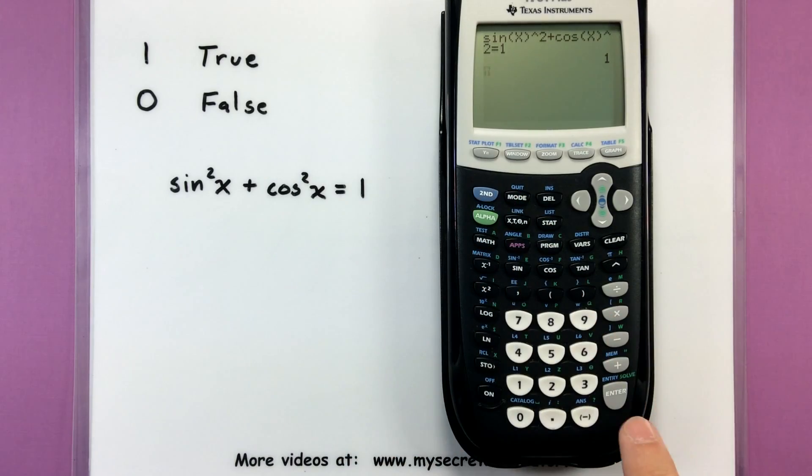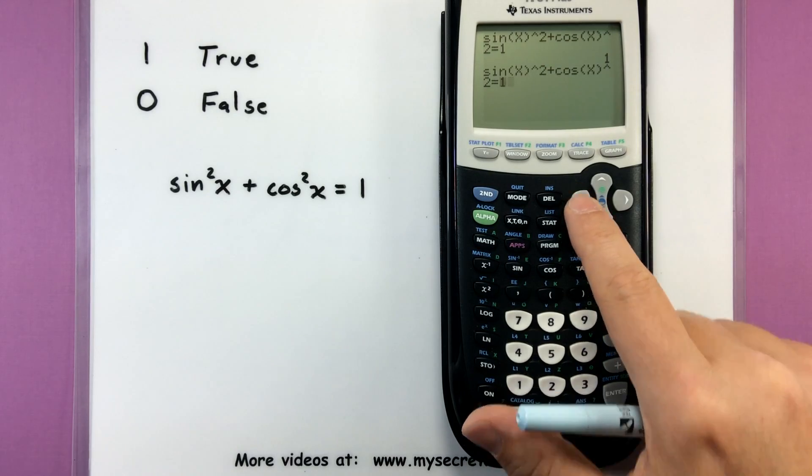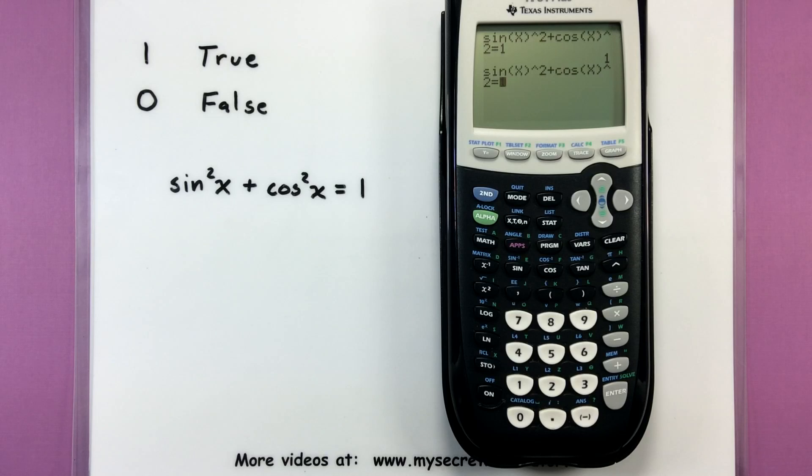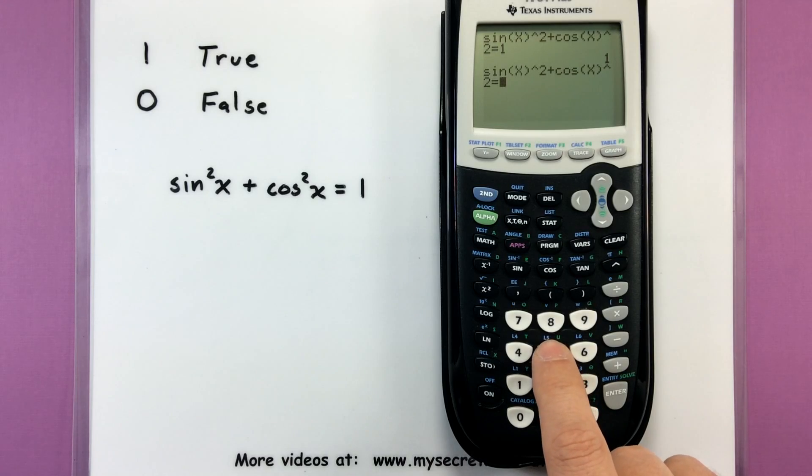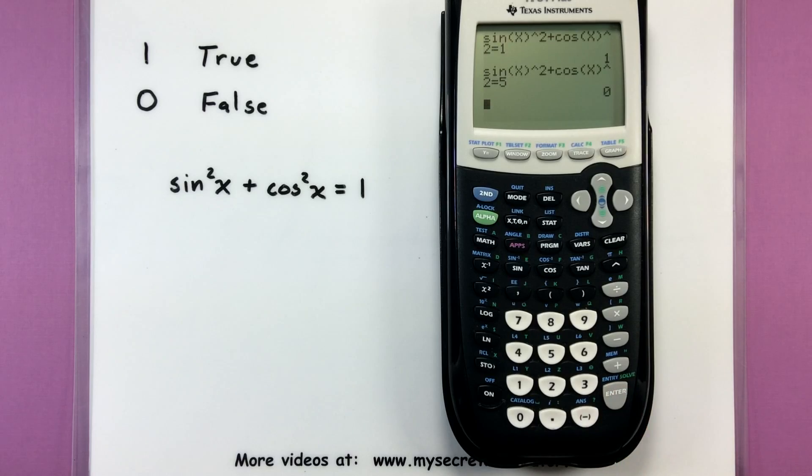Now, let me go ahead and press second enter so I can bring all that stuff that I typed in earlier. And watch what happens if I say, is this all equal to a different number? Is it all equal to five? Now it will return a zero saying, no, that that is not the true identity.